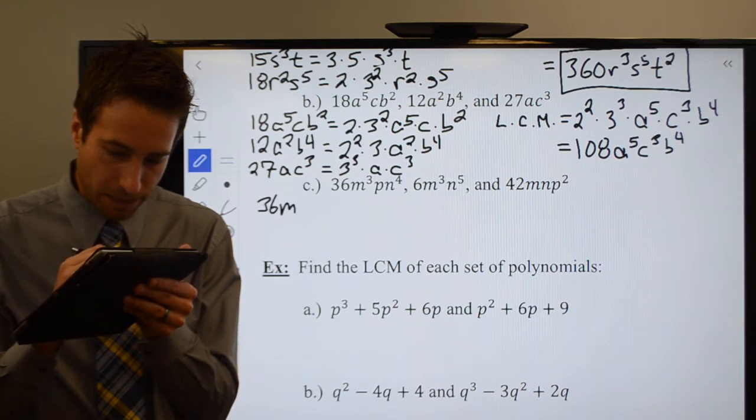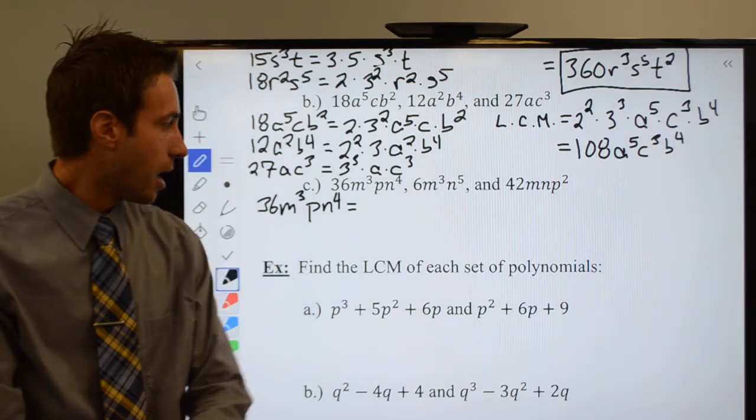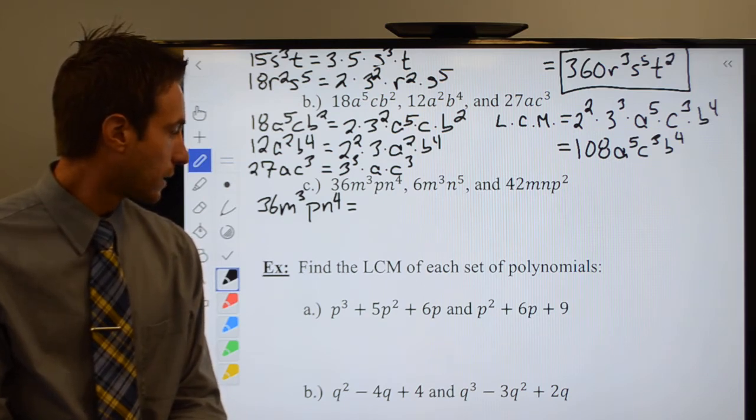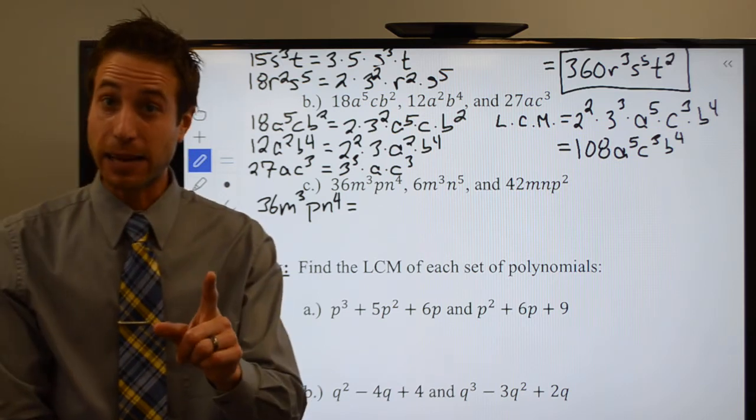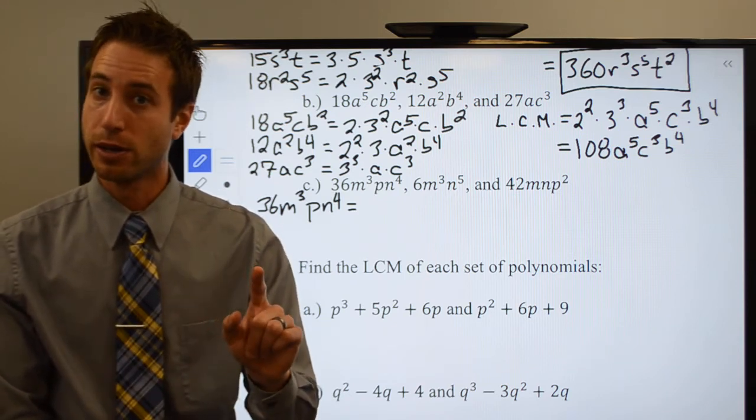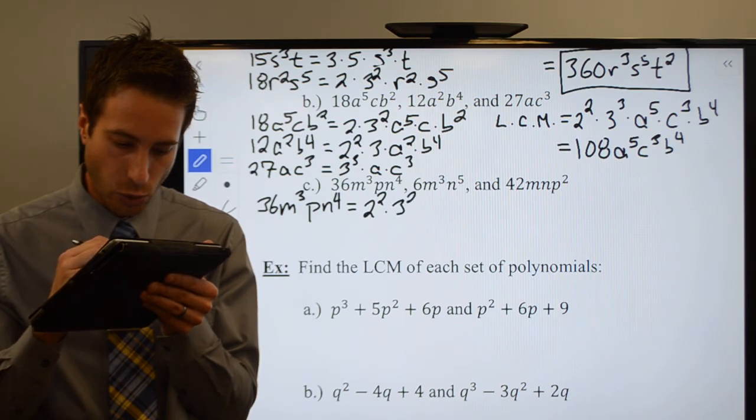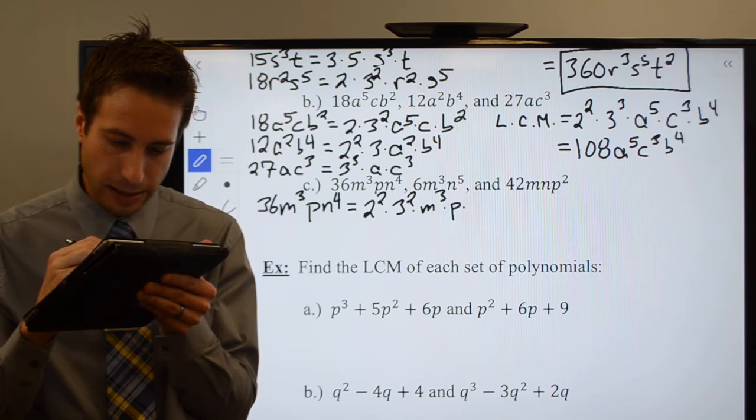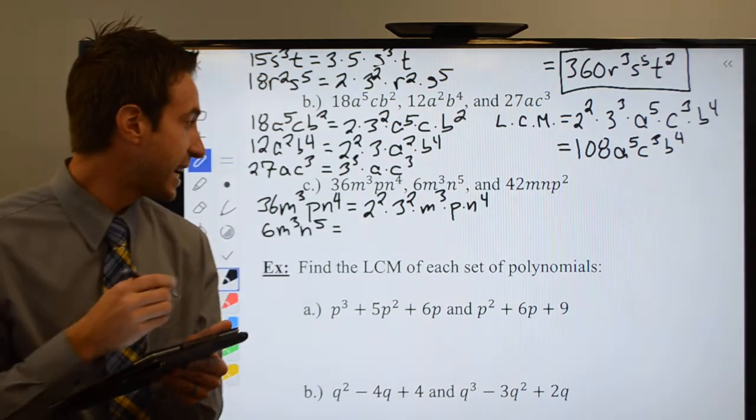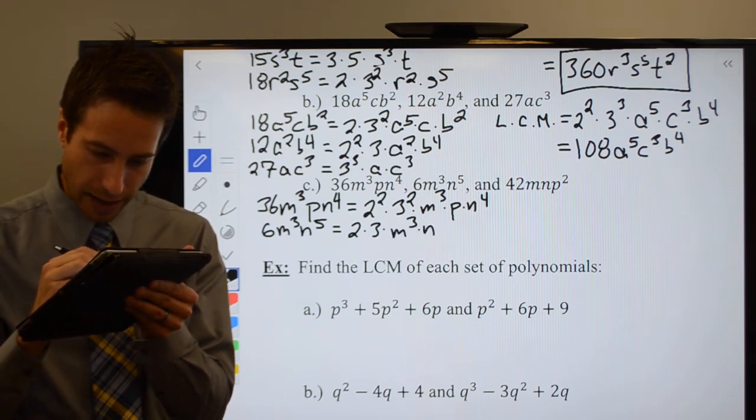36m³pn⁴. Let's see here. 36, I could do 6 times 6. 6 times 6 gets me 36, but the 6 will break down into 2 times 3 and 2 times 3, which means I wind up with 2² times 3², or 4 times 9. So that's 2² times 3² times m to the third times p times n to the fourth. Great. 6m³n⁵. We just did a 6. We know 6 is 2 times 3, so it'll just be 2 times 3 times m to the third times n to the fifth.